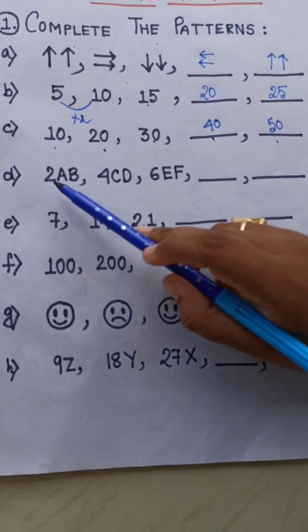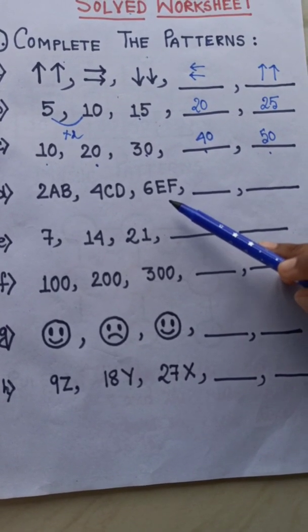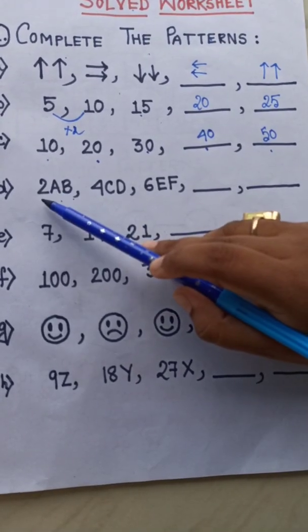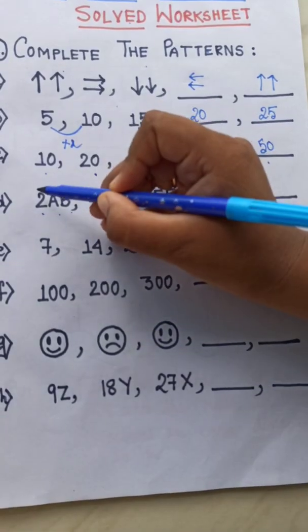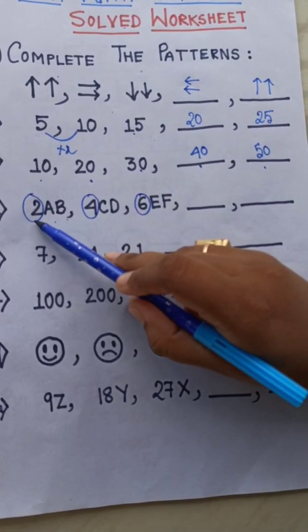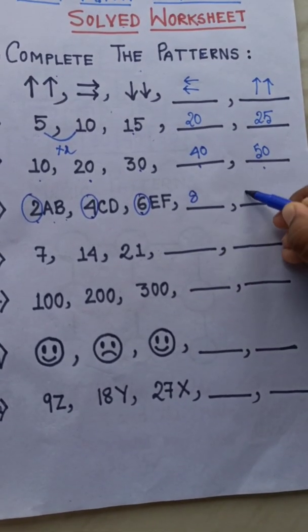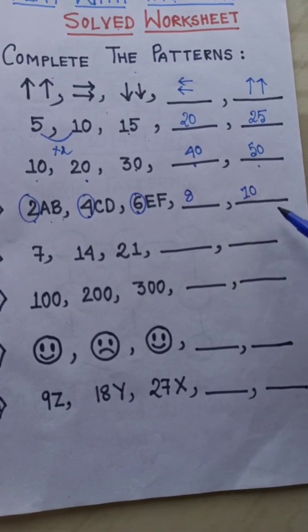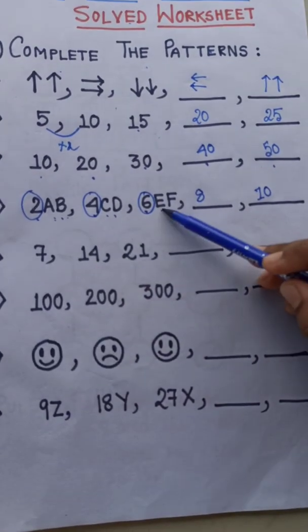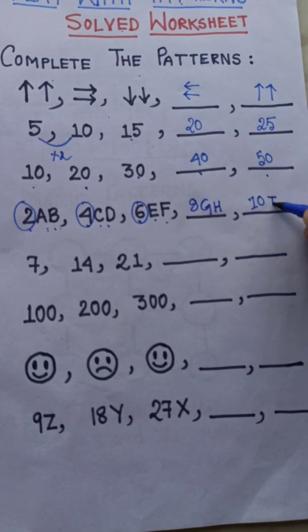Next: 2, A, B, 4, C, D, 6, E, F. In this type of pattern, numbers are given as well as alphabets. First we see how the numbers are increasing — there is 2, then 4, then 6 — so 2 ones are 2, 2 twos are 4, 2 threes are 6. Next will be 2 fours are 8 and 2 fives are 10. Now for the alphabets: A, B, C, D, E, F — so next will be G, H, then I, J.